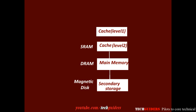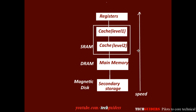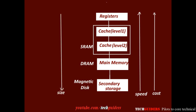We can also consider the registers at the topmost level of the hierarchy. Here the size is very small, the cost is very high, and it is of very high speed. So as we go up the hierarchy, the speed increases, the cost increases, and the size reduces.